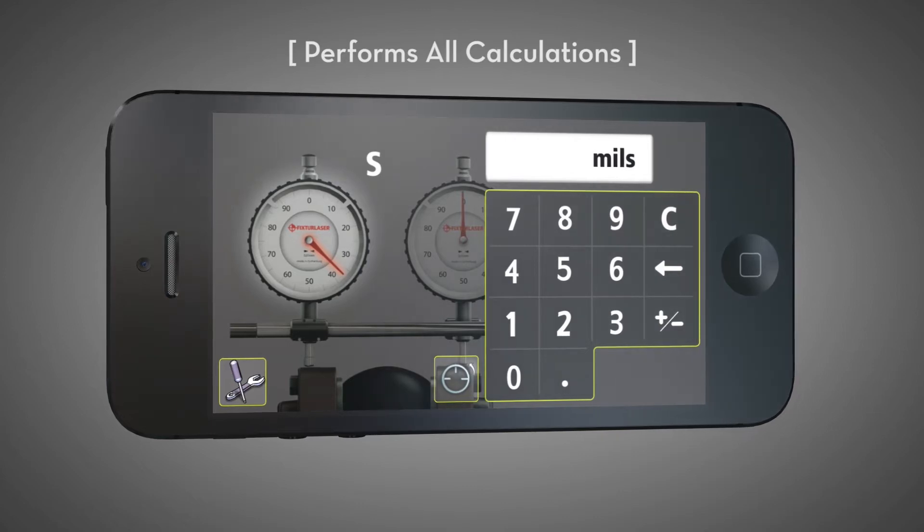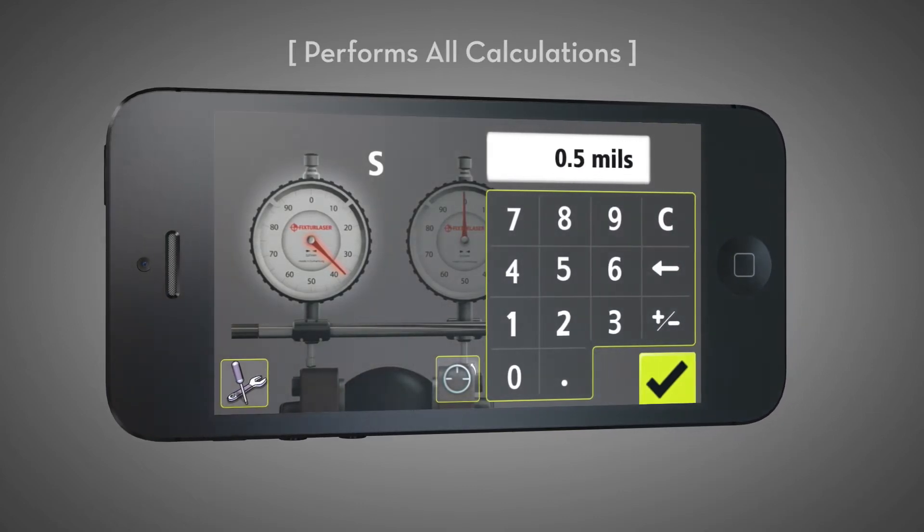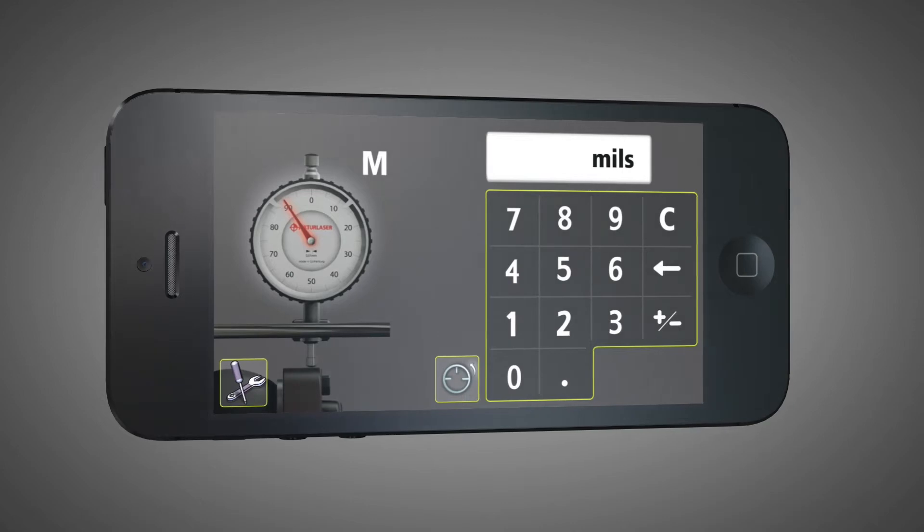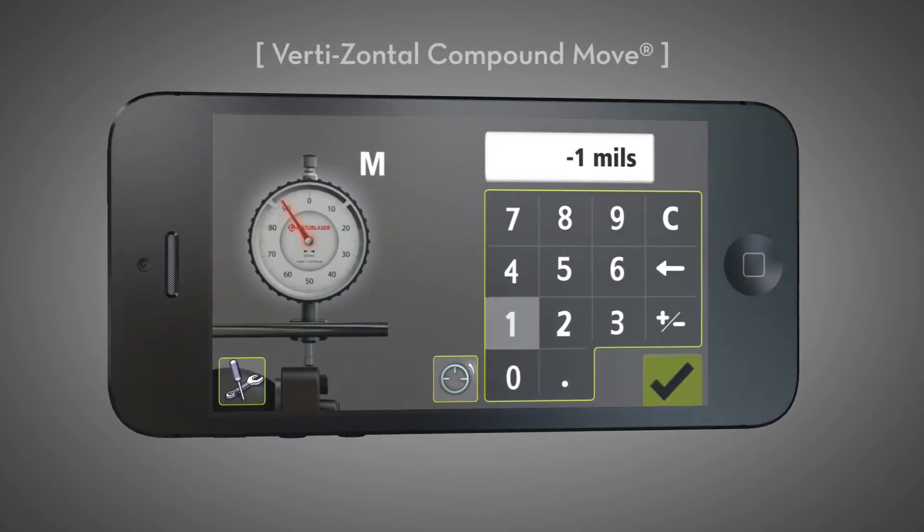Dials performs all the shaft alignment calculations for the user. The app guides the user step-by-step through Vibraline's revolutionary vertizontal method.